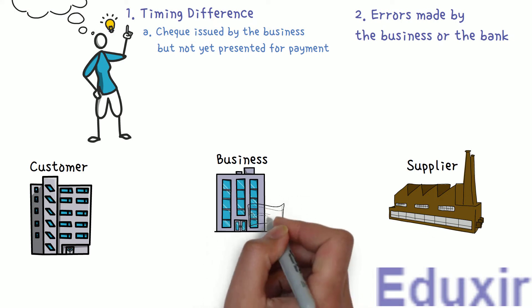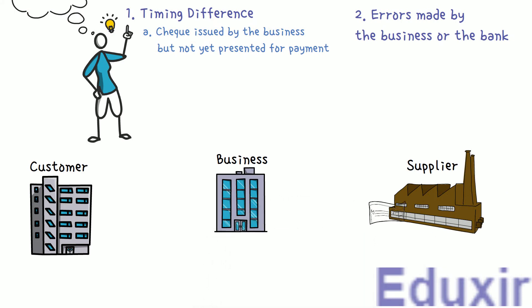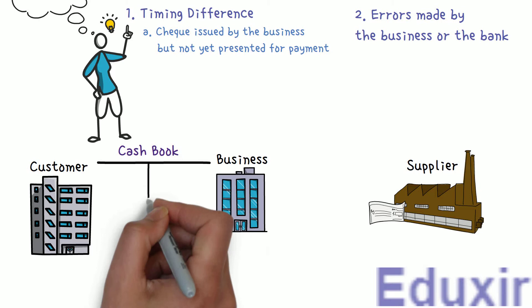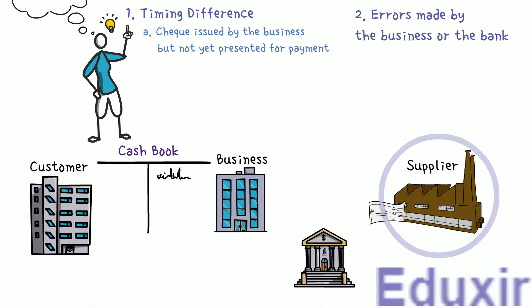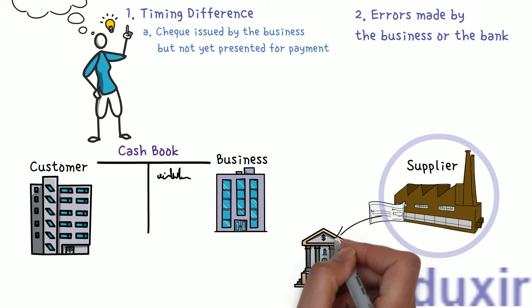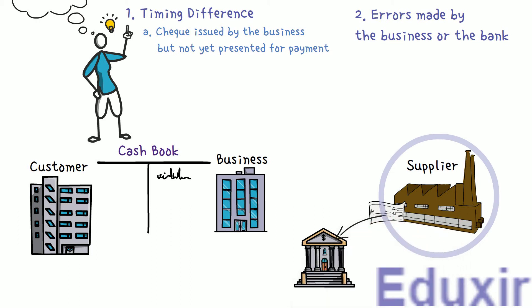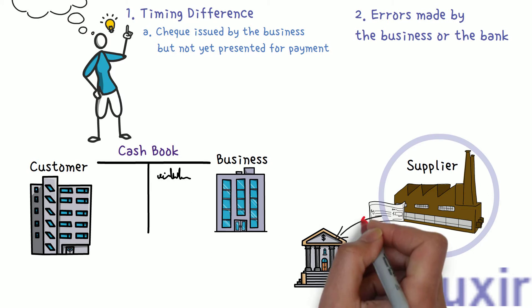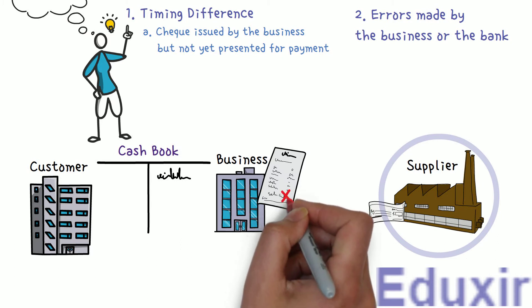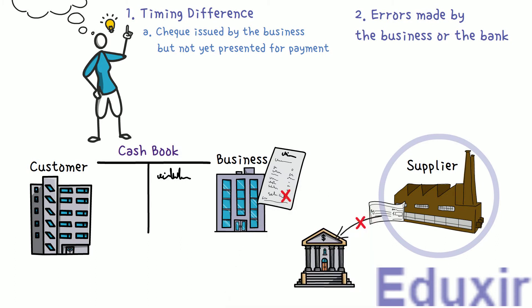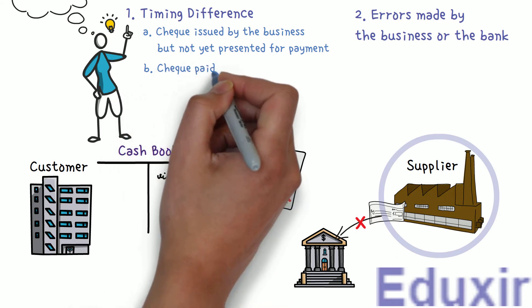When the business issues a check to the supplier or creditors, they are immediately entered on the credit side of the cashbook. The supplier or creditor has to encash this check by presenting it in the bank. In some cases, the creditor or supplier may not present this check immediately. So when the bank statement is received, this check will not appear in the bank statement. The next reason is checks paid into bank but not yet collected.